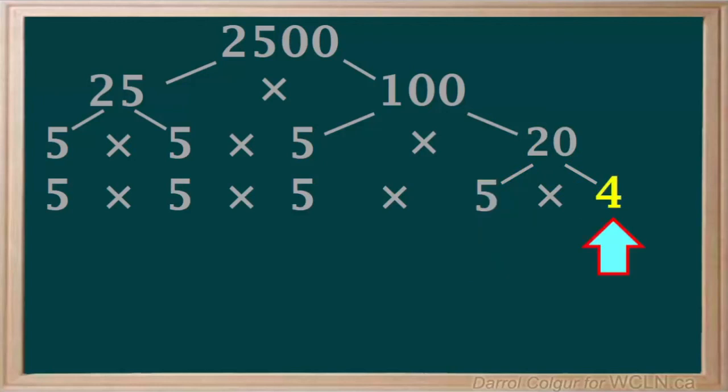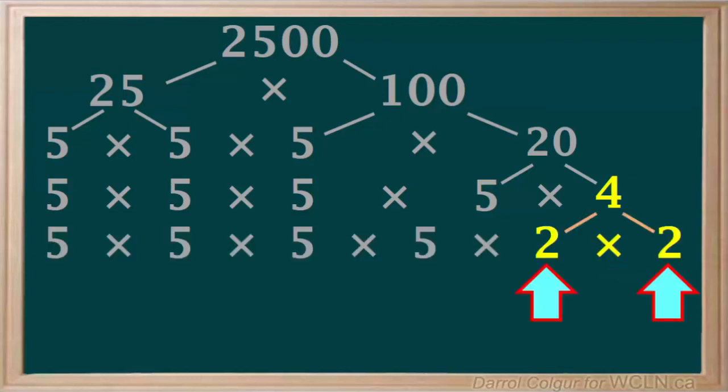But 4 is not prime. It can still be divided by 2. Dividing 4 by 2 gives us 2 times 2. These are all prime numbers, so we're now finished factoring 2500 into prime factors.